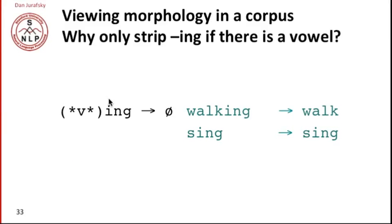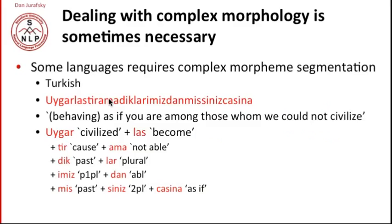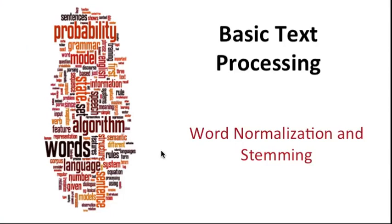That's a simple example of morphology. It turns out that in some languages, much more complex morphology is necessary. Turkish is the famous example: there's a single Turkish word meaning 'behaving as if you were among those whom we could not civilize.' In Turkish, this is one word — a very long word with many morphemes: the civilized stem, plus an affix meaning 'to become,' an affix meaning 'cause,' an affix meaning 'not able,' and so on. So in languages like Turkish, and as we saw for the very long compound nouns in German, we're going to have to do a richer and more complex morpheme segmentation. So word tokenization and normalization requires stemming to map words to a normal form.